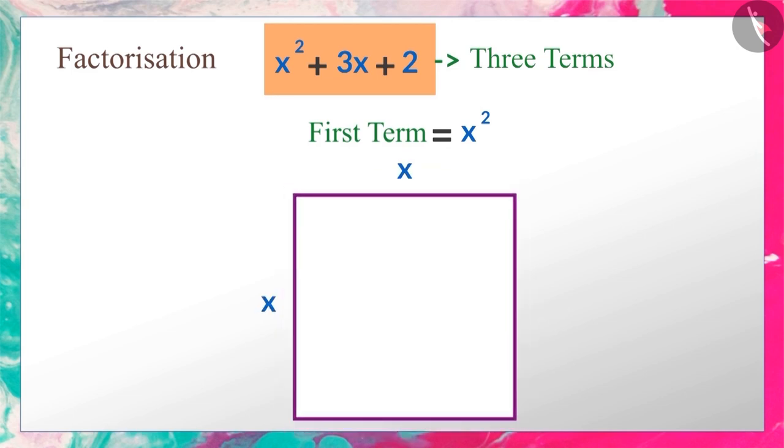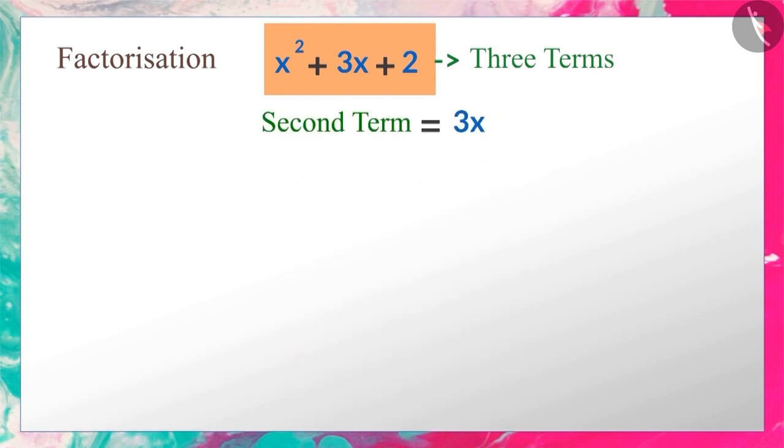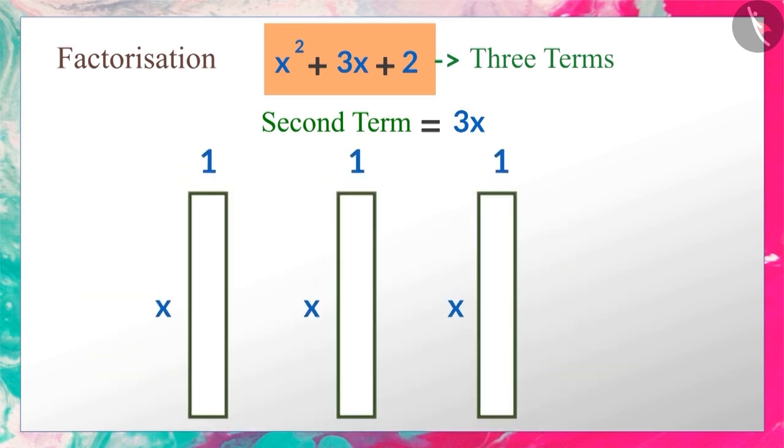We can represent the second term with these three rectangular shapes. The area of each of these shapes is x, and thus the combined area of the three shapes is 3x.